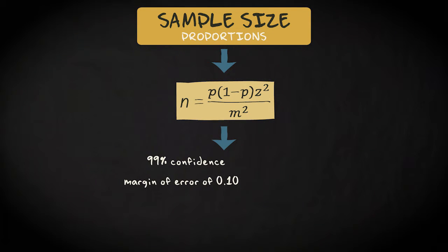We know the values of m and z. They are 0.10 and 2.58. Note that the value 2.58 comes from the z-table. It is the z-score corresponding to the 99% confidence level. What we don't know is the value of p.